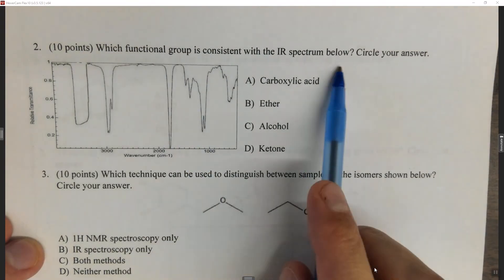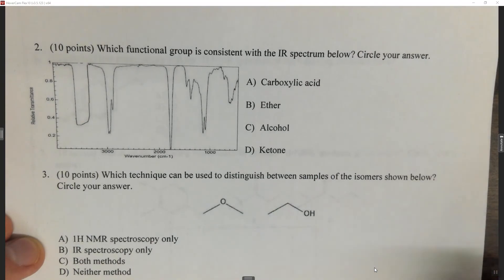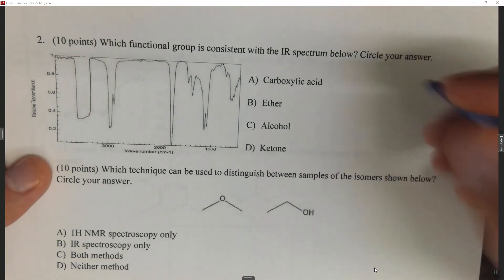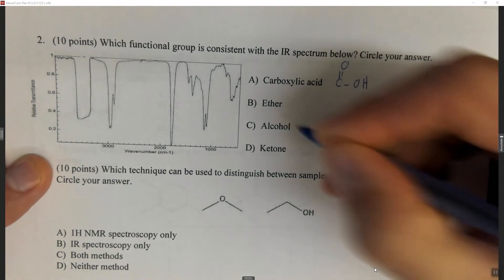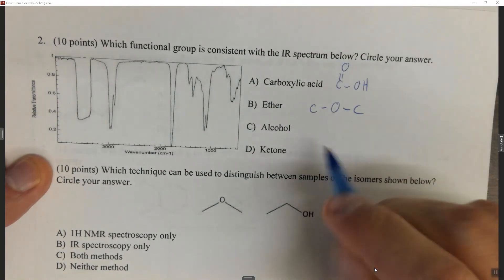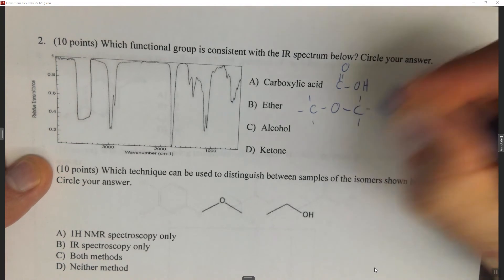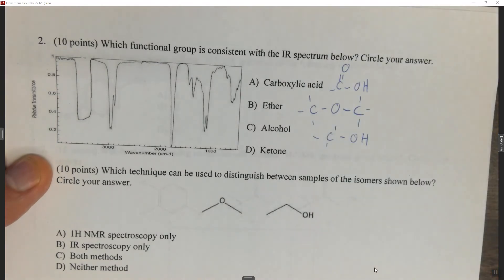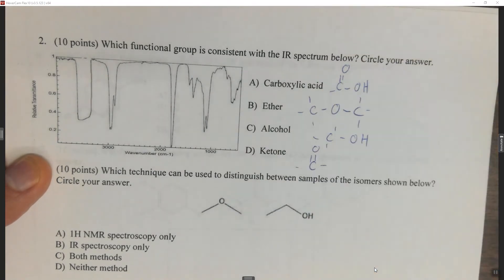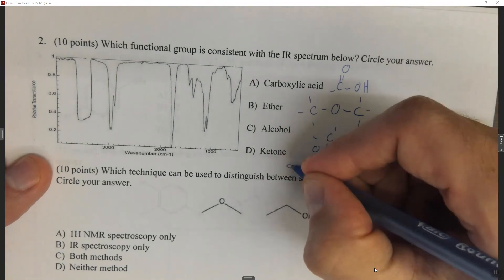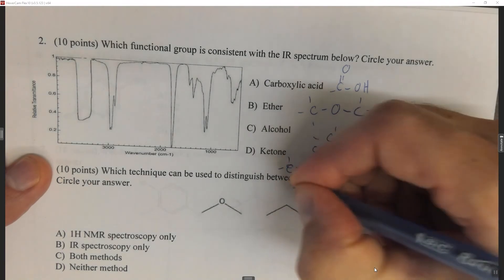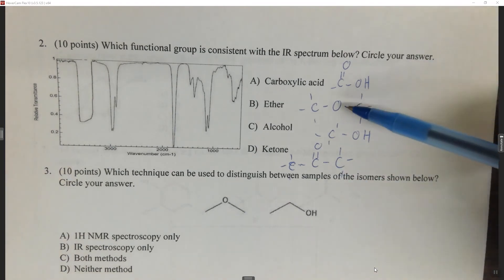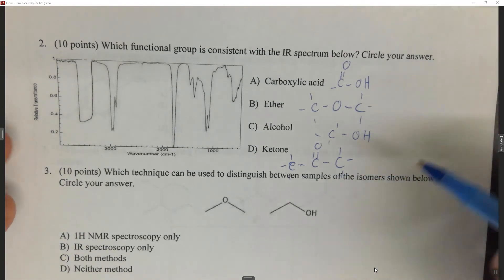Question two says: which functional group is consistent with the IR spectrum below? You need to know what the functional groups are. A carboxylic acid has a C=O and an OH. An ether has a carbon attached to an O attached to another carbon. An alcohol is a carbon attached to an OH. A ketone is a C=O attached to carbons on both sides — if one side were an H, it would be an aldehyde. Make sure you're familiar with all your functional groups.